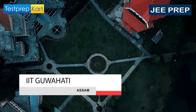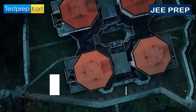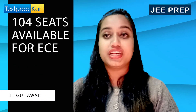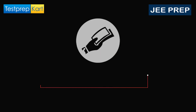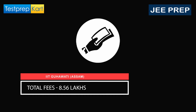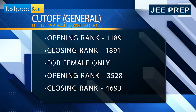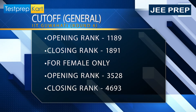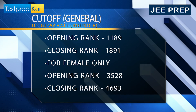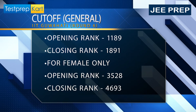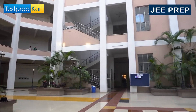The next IIT is IIT Guwahati, which is in Assam, with a NIRF ranking of 7. The seats available in ECE are 104, and the total fees is around 8.56 lakhs. For the 2021 Round 6 general category cutoffs, the gender-neutral opening rank was 1189 and the closing rank was 1891. For females, the opening rank was 3528 and the closing rank was 4693.